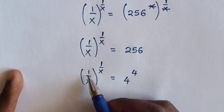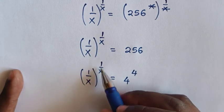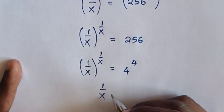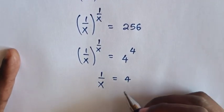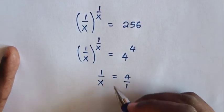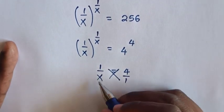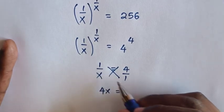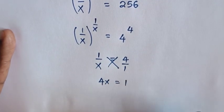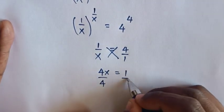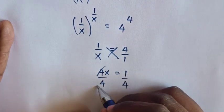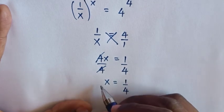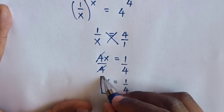Then we compare: base of 1 over x is equal to 4, and power of 1 over x is equal to 4. Therefore 1 over x is equal to 4. Then this 4 is same as 4 over 1, so we cross multiply. This gives us 4x is equal to 1. Then we divide by 4 on both sides, this and this will cancel, so x is equal to 1 over 4. That is our final answer.